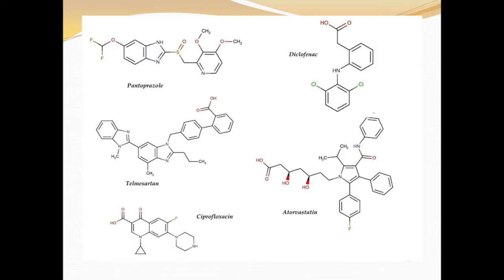These drug molecules are actually different kinds of organic compounds, synthesized in the laboratory. Here I have selected five drug molecules for representation: Pantoprazole, Diclofenac, Telmisartan, Atorvastatin, and Ciprofloxacin. These drugs are very common; people commonly use them to treat different kinds of medical conditions. As you can see, they are actually small organic molecules.